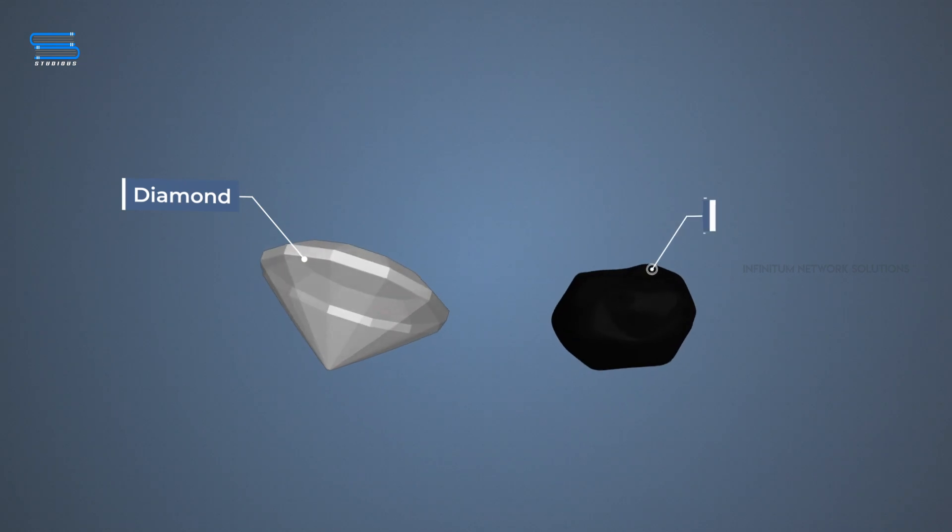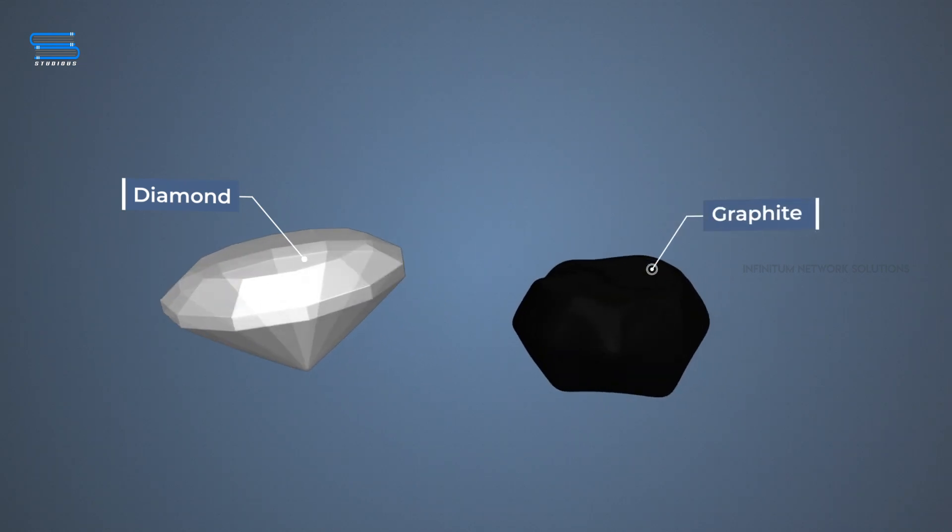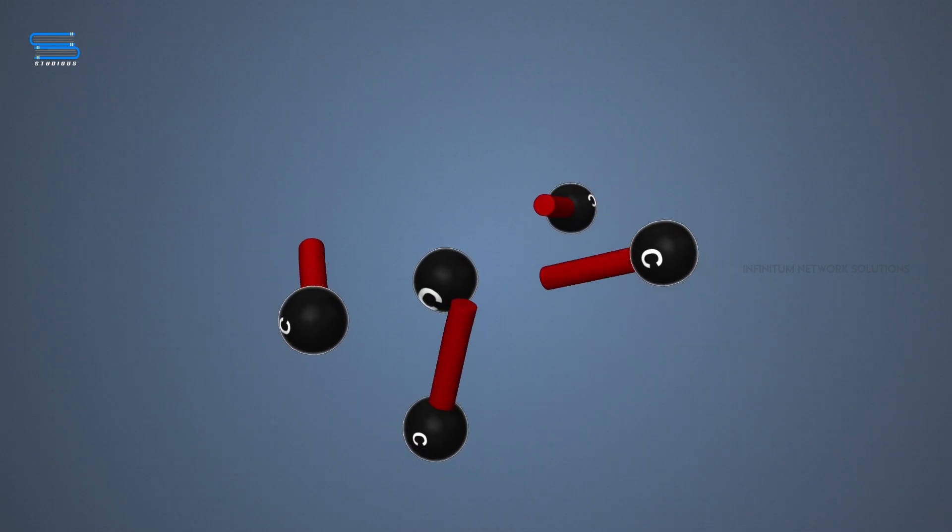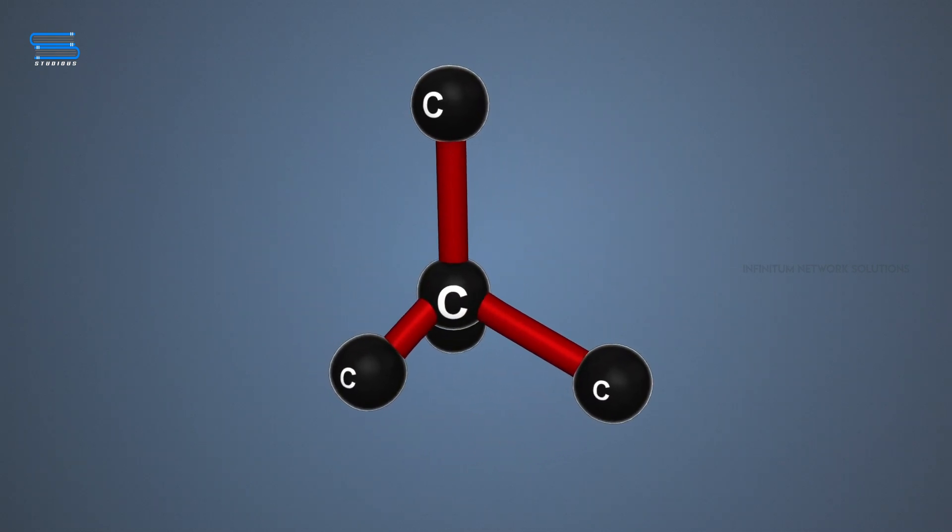Both diamond and graphite are formed by carbon atoms. The difference lies in the manner in which the carbon atoms are bonded to one another.